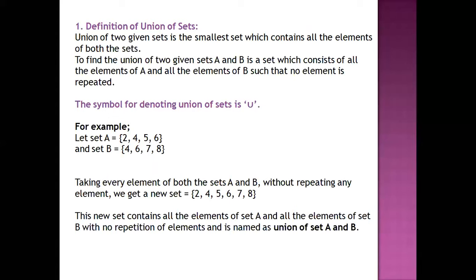How can we calculate the union of sets? The union of two sets is the smallest set which contains all the elements of both sets — but we include the elements of both sets without repeating any element.